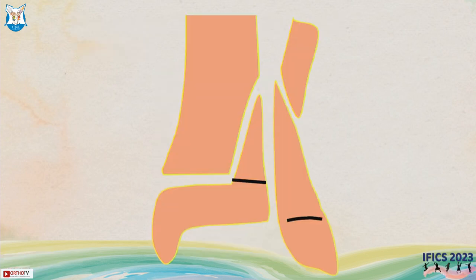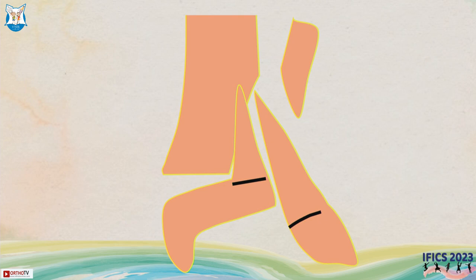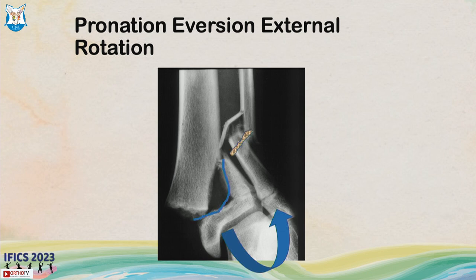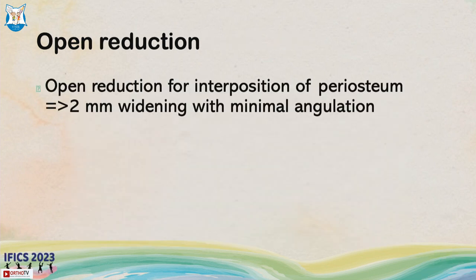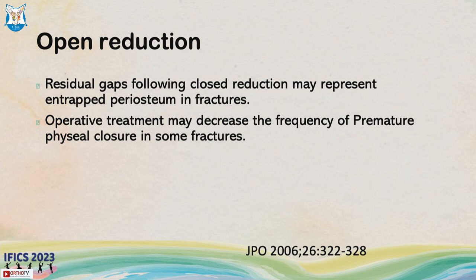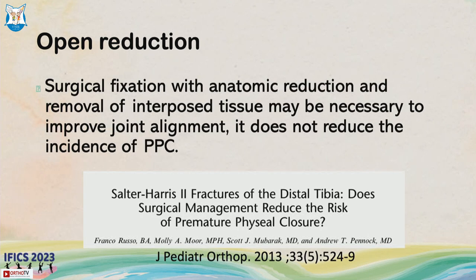Pronation eversion external rotation injury produces displacement of the distal tibia with a Salter-2 pattern and a metaphyseal fracture of the fibula. Close reduction and casting is a viable option because there is a large fracture surface and it is extra-articular with some remodeling potential. However, if you have more than two millimeters of gap medially after closed reduction in OT, you may need a small incision to remove the interposed periosteum.